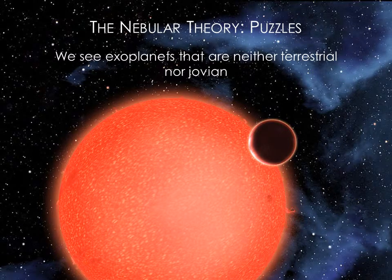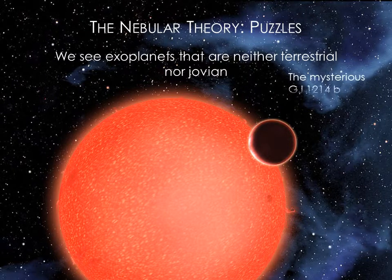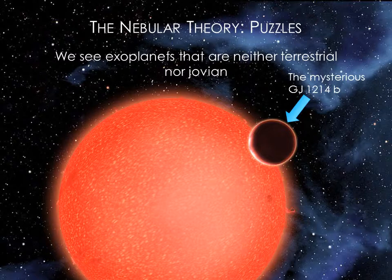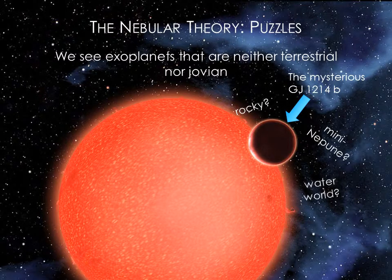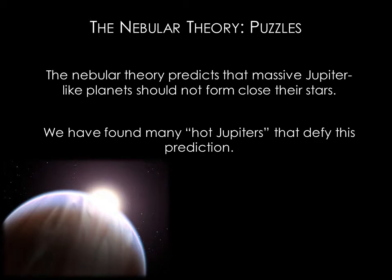Nevertheless, there are observations that are puzzling. For example, we are seeing many exoplanets like GJ1214b that are neither terrestrial nor Jovian. GJ1214b could be a rocky planet with a hydrogen-rich atmosphere, a mini-Neptune, or an ocean planet. There are more planets like GJ1214b that are thought to be water worlds. Another issue is the orbits of many exoplanets. The nebular theory predicts Jovian planets should form only in the cold outer regions of star systems, but this is not what we see. Astronomers have found many large, gaseous planets with close-in elliptical orbits.